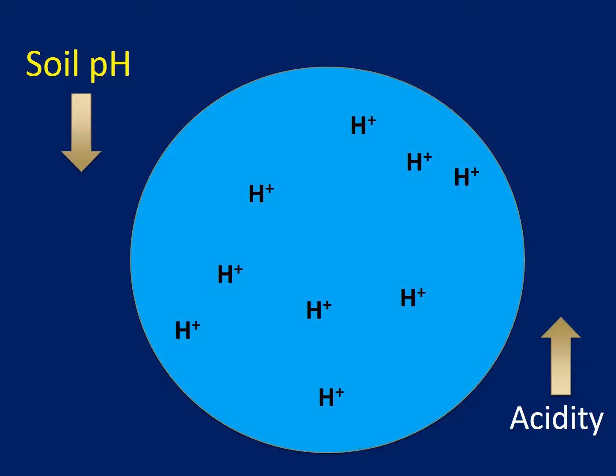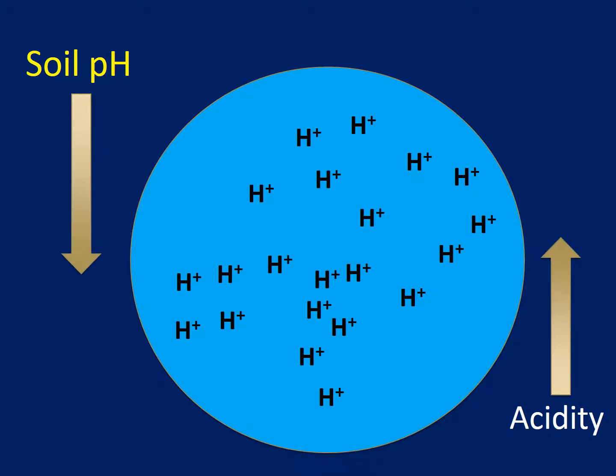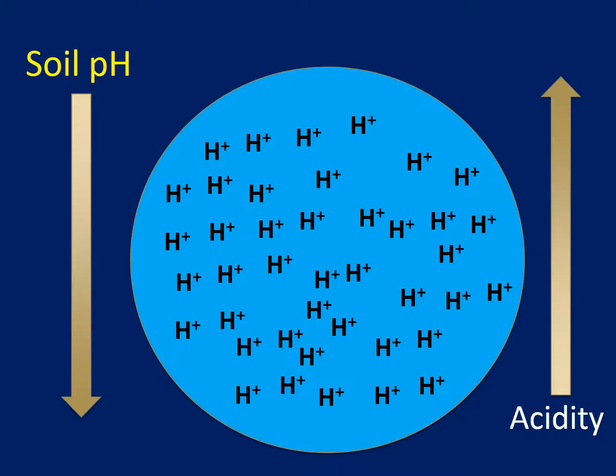To start off, soil pH is essentially the measurement of the level of hydrogen ions that are present in the soil. As you can see from this basic graphic, when we add hydrogen to the system, our acidity is going to increase and our soil pH is going to decrease — a direct result of the number of hydrogen ions present in the system.